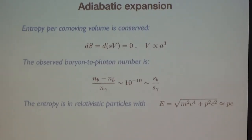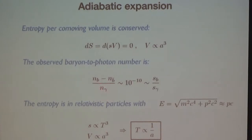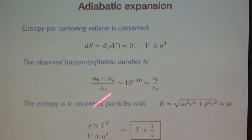Let me come back to the equation for entropy. Because all the entropy is in relativistic particles in thermal equilibrium, it scales like T³. The volume goes like a³, so you get that the temperature of the relativistic plasma goes like 1/a — adiabatic cooling. The temperature goes down as the universe expands. Once all baryons and anti-baryons annihilate, you're left with a little leftover of baryons whose number density is conserved, going like 1/a³. That's why this ratio is basically constant throughout most of the history of the universe.